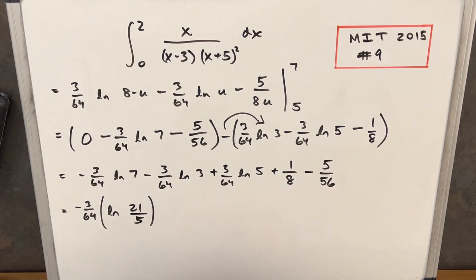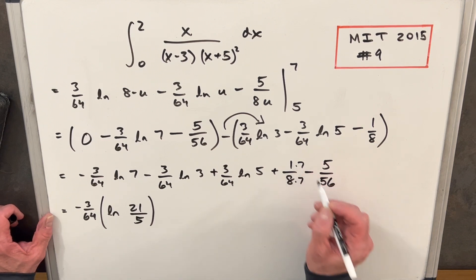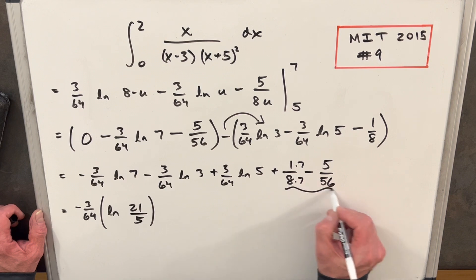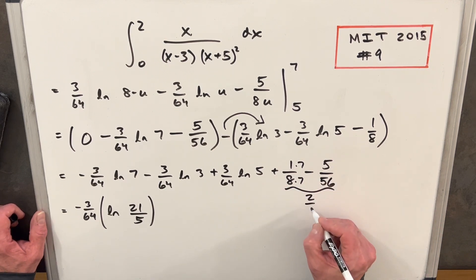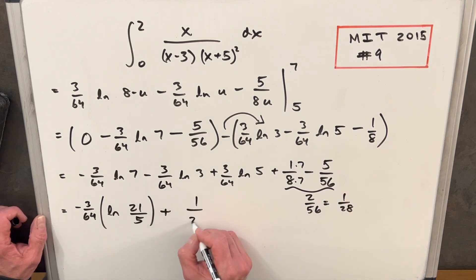And then here, one eighth minus five over 56, you just need a common denominator. If we multiply top and bottom here by seven, we're going to have seven over 56. So seven minus, yeah, seven over 56 minus five over 56 is two over 56. But that's the same thing as one over 28. So we're just going to have a positive one over 28 here. And that's going to be our solution.